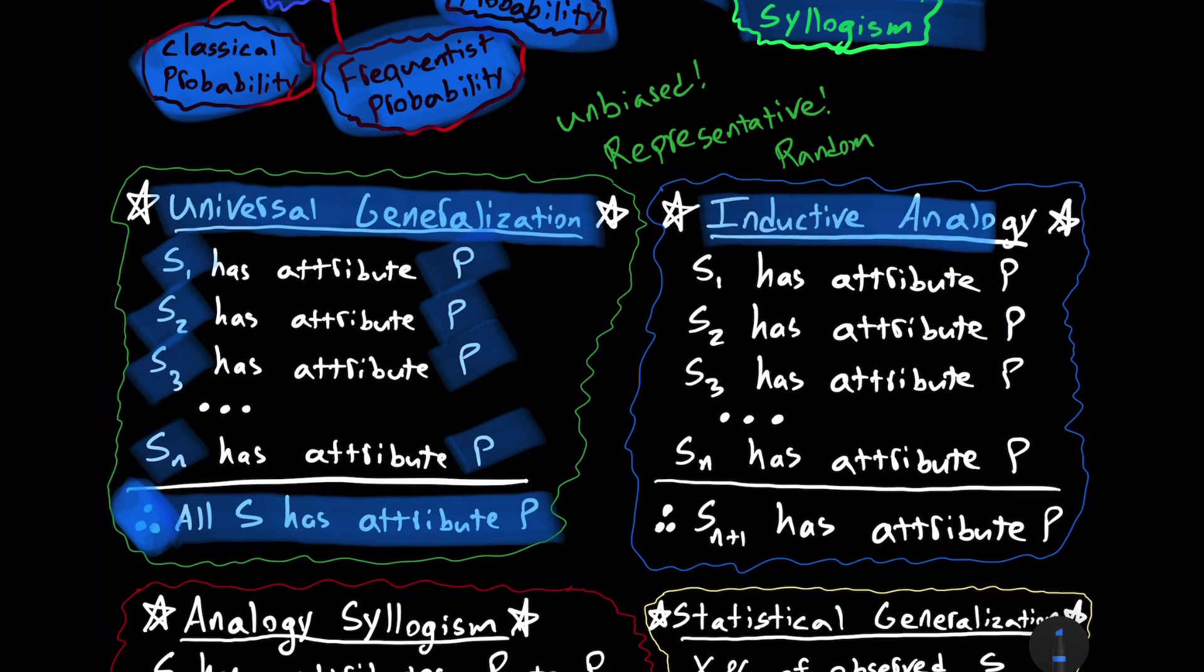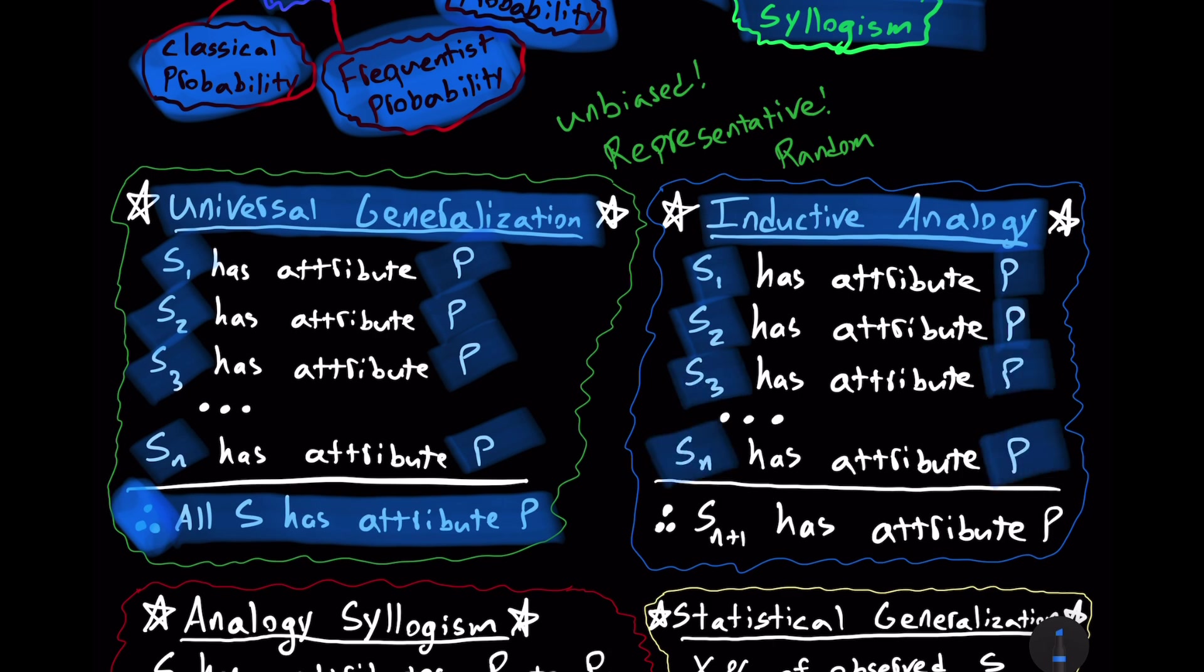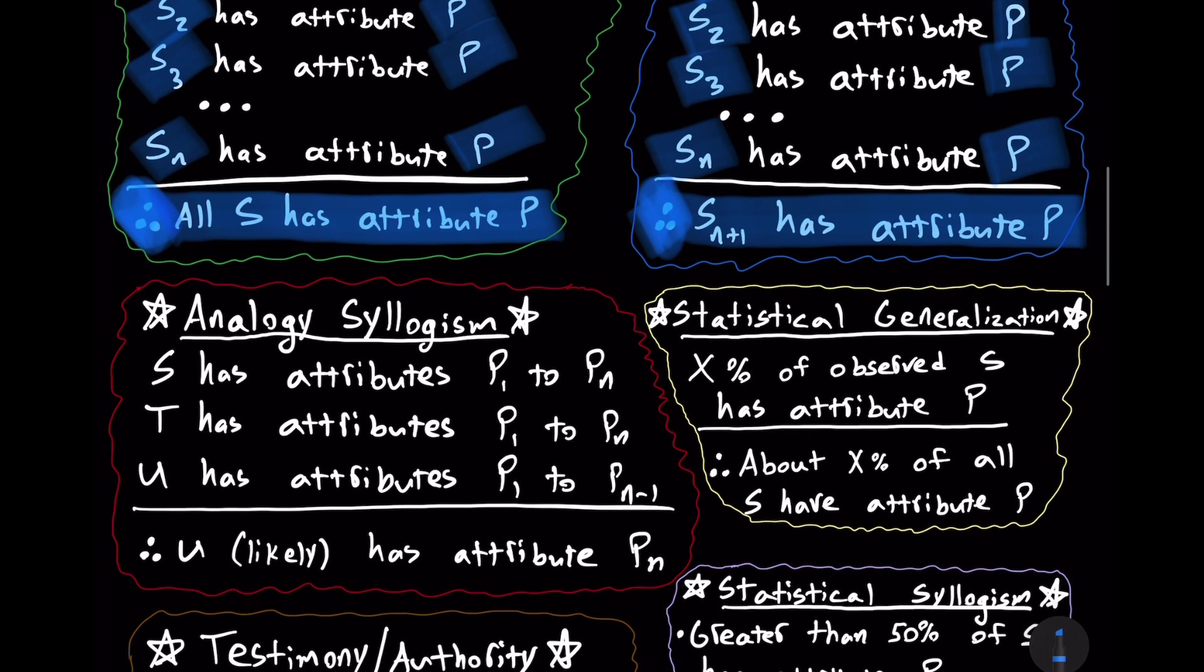Now, an inductive analogy is different. It makes a predictive inference about the next instance of something. Therefore, it is a less broad conclusion than a universal generalization. S sub one has attribute P. S sub two has attribute P. S sub three has attribute P. And so on and so forth, down to number N. S sub N has attribute P. Therefore, the next S observed will have the attribute of P. So, S sub N plus one. It's not a universal sweeping statement about all S. It's just saying the next S will have attribute P. That's an inductive analogy, which is different than a universal generalization.